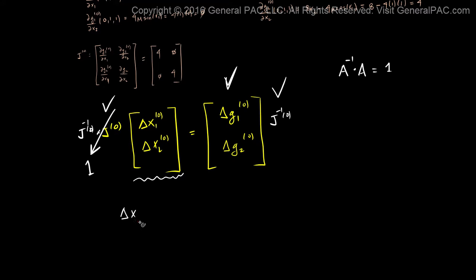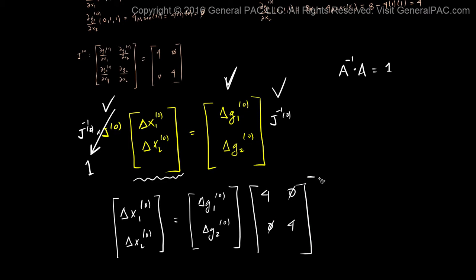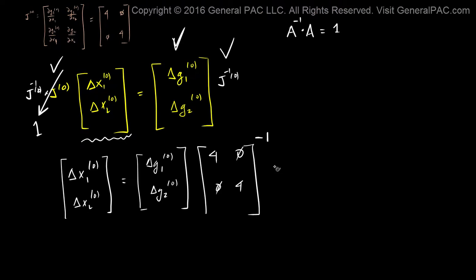So that brings us to the next set of equations, which is that delta x1 and delta x2 of the zeroth iteration are equal to delta g1 of the zeroth and delta g2 of the zeroth. So let's multiply that by, remember the Jacobian matrix we said was 4, 0, 0, and 4. But now we have to take the inverse of this Jacobian matrix.